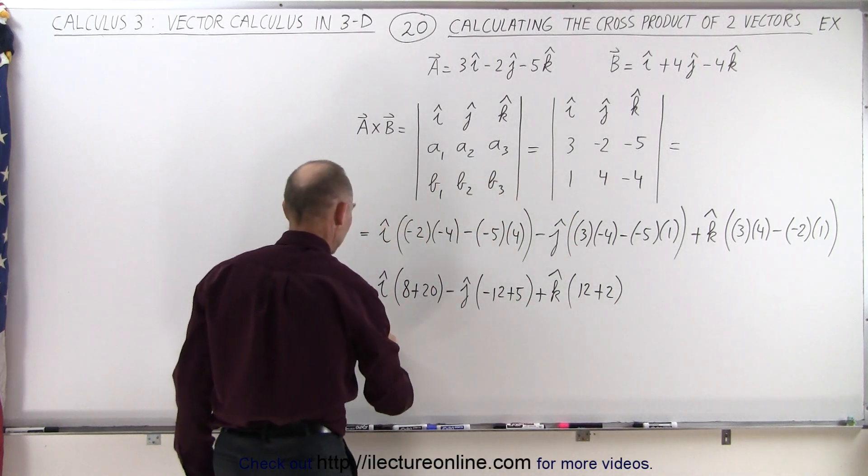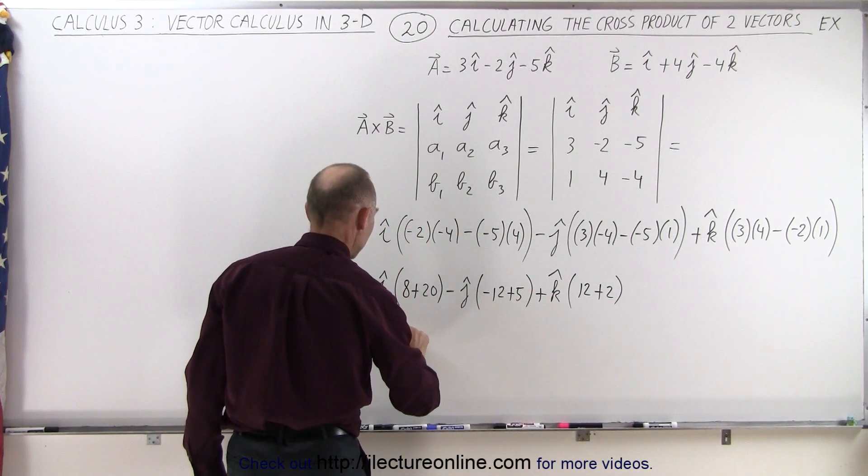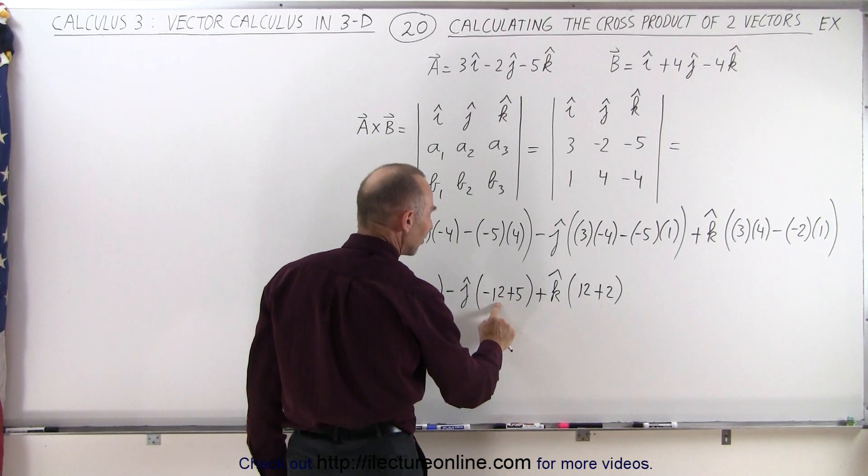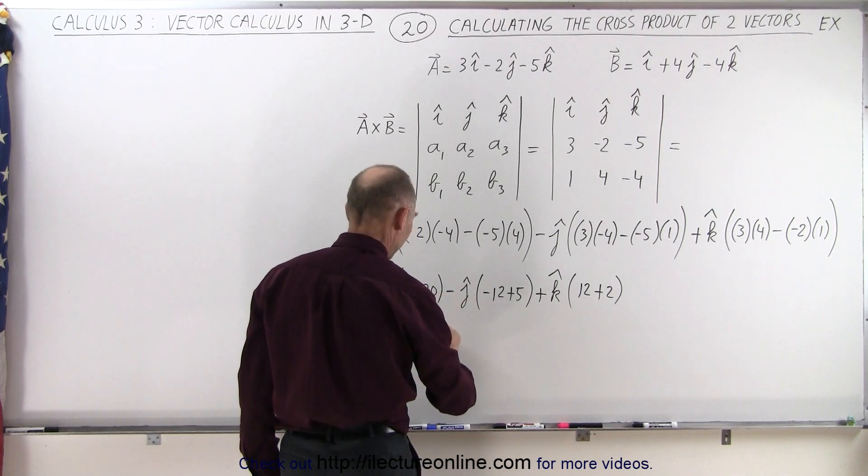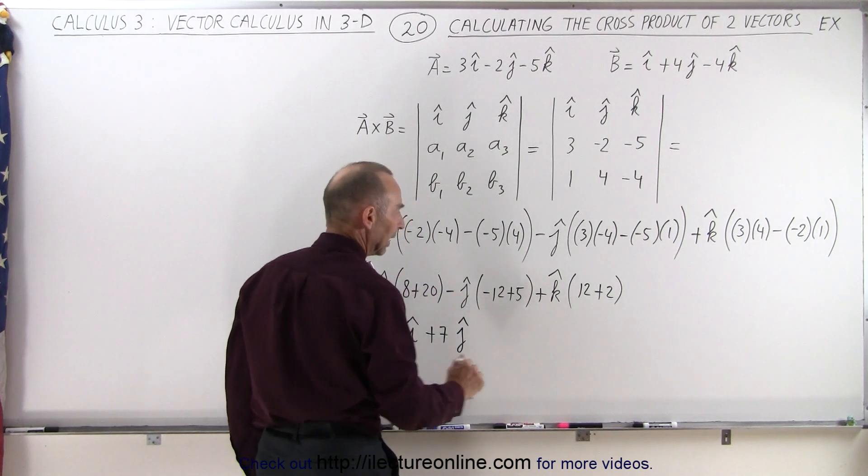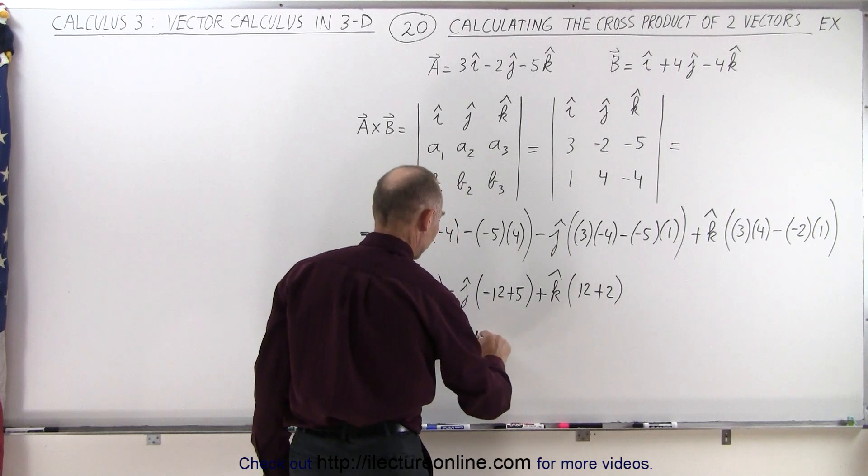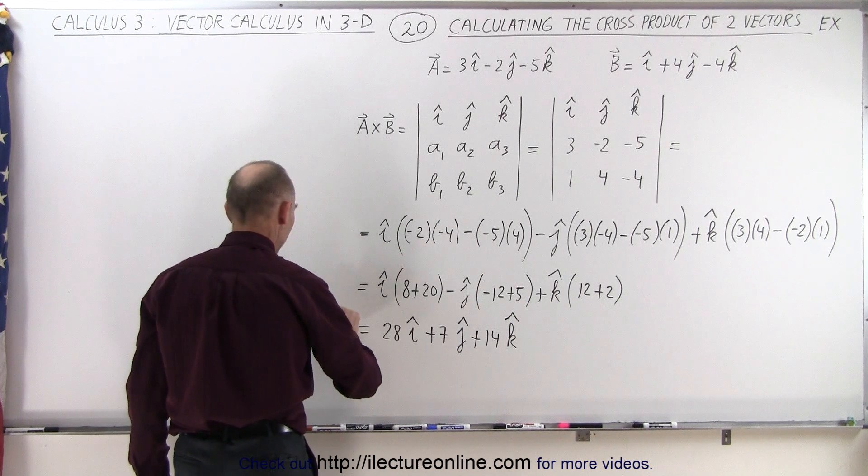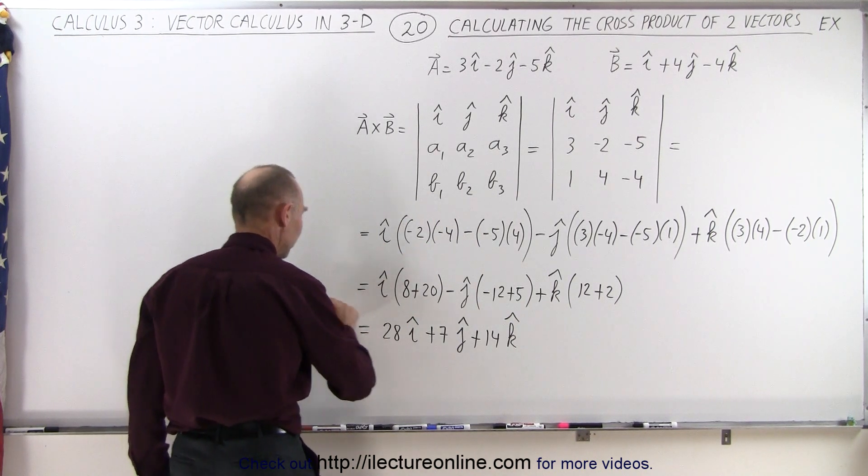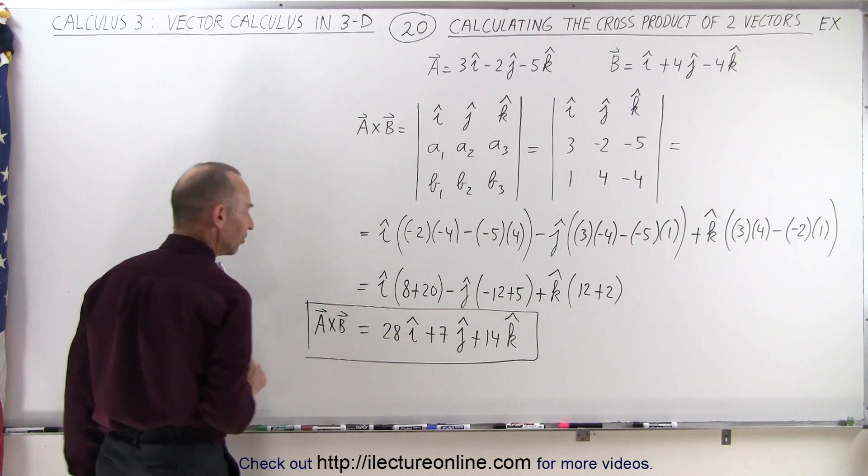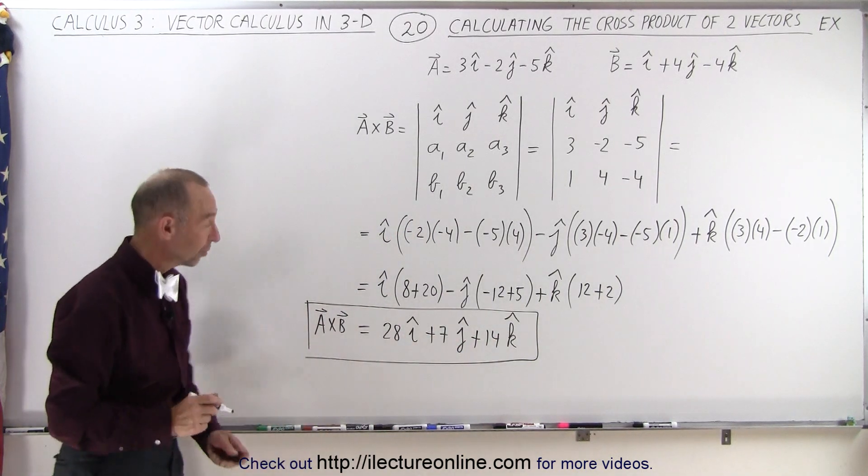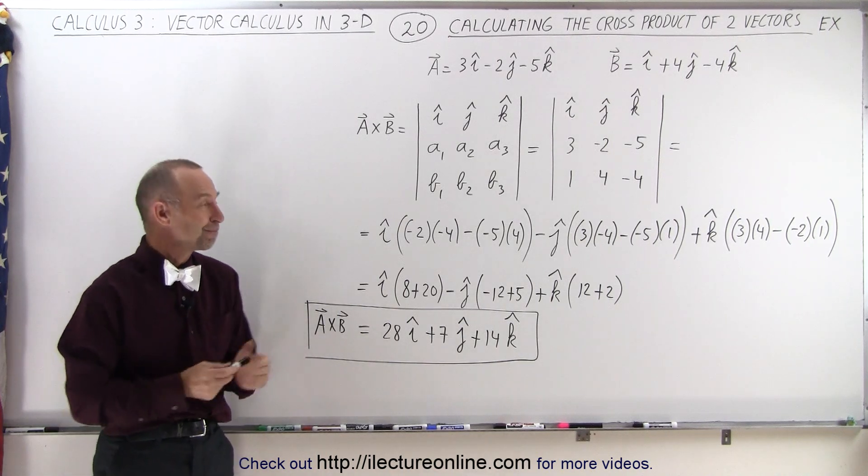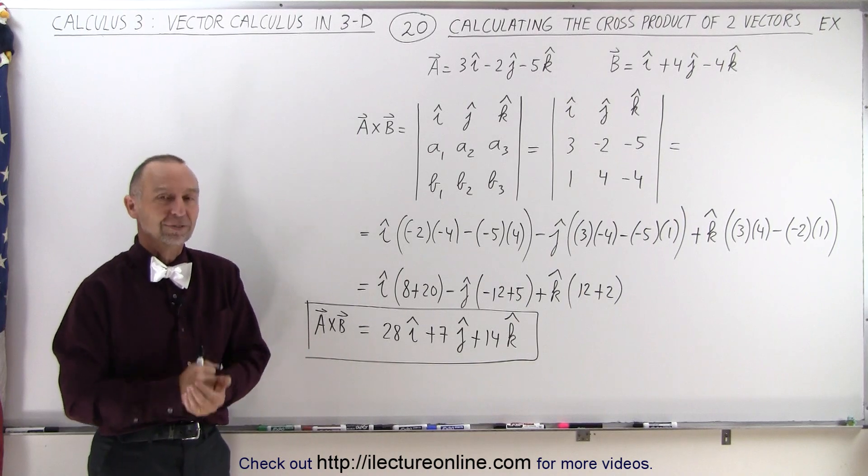So here we have this is equal to 8 plus 20, that's 28 in the i direction. That's minus 12 plus 5, that's a minus 7 but with the minus here becomes a plus 7 in the j direction. And 12 plus 2 that's plus 14 in the K direction. So here we have A cross B which is another vector, a third vector called vector C, which is now defined by these three components: 28i plus 7j plus 14k. And that's how we find the cross product of two vectors.